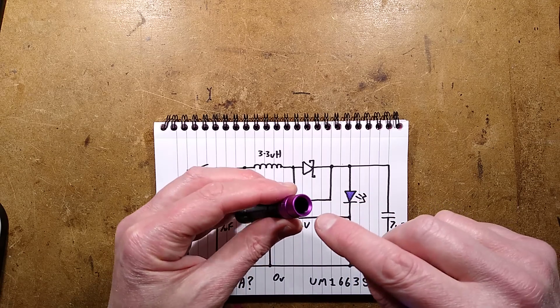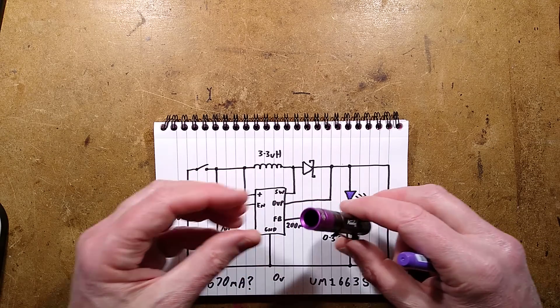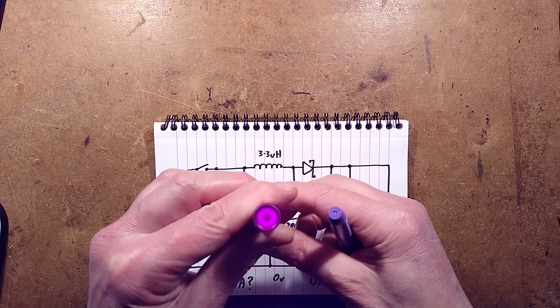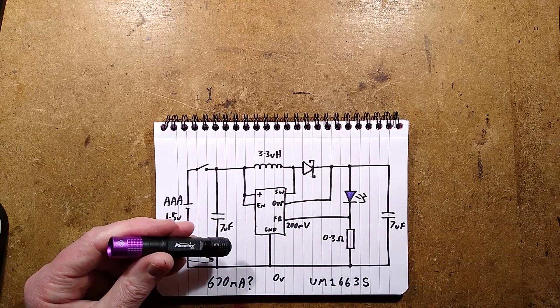But they've put the icing on the cake with that dark filter in there, so it only passes roughly 365 nanometers, and it does. And it's a very nice little flashlight indeed.